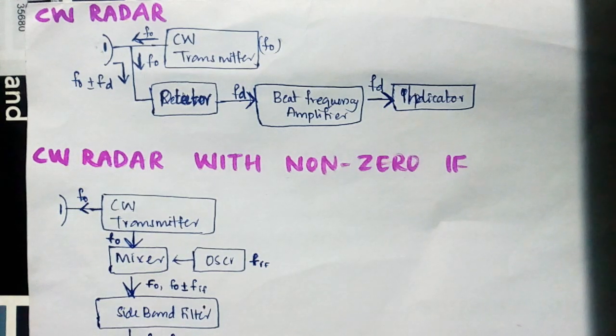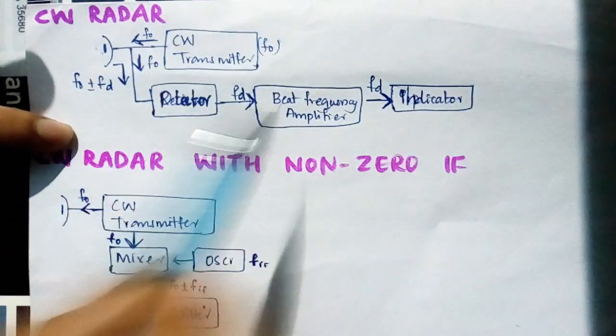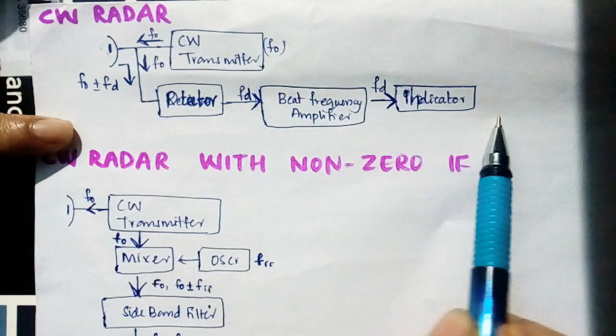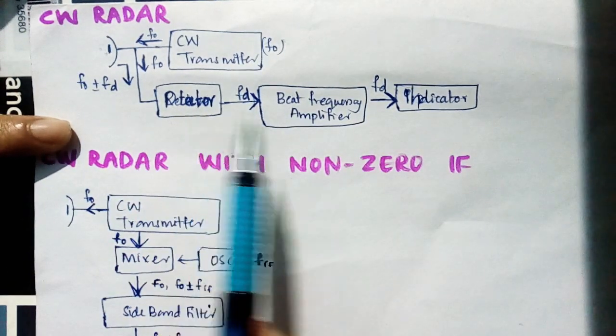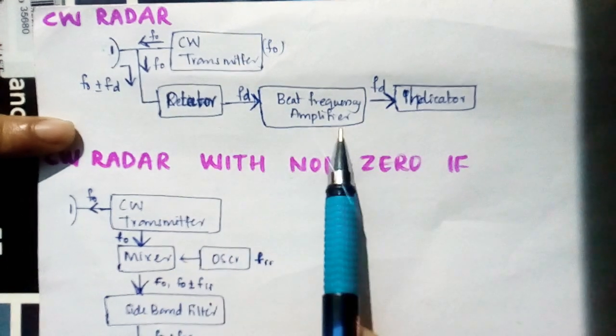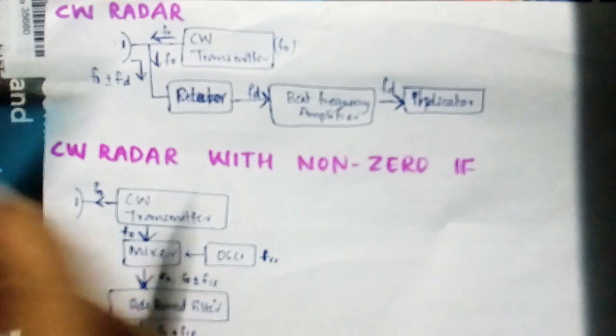The first section is very simple. The transmitter section consists of a CW transmitter, and the receiving section simply has a detector, amplifier, and indicator. That is for detecting the signal, then amplifying, then indicating.